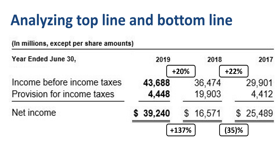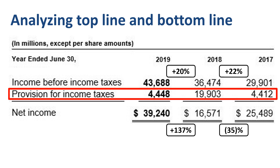If revenue grows at 14% per year and costs do not grow at that same rate, then 20 to 22% income before tax growth is a reasonable expectation. If income before income taxes is growing at stable rates while net income fluctuates heavily, then the provision for income taxes is the line item that causes the variability.